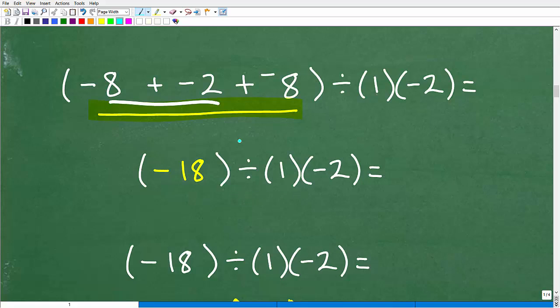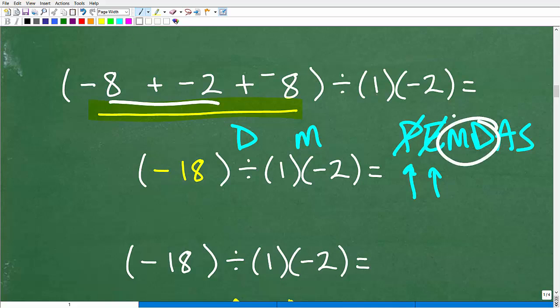So what operations do we have left? Well, if you look here, we have division and we have multiplication. So we have to continue to reference our PEMDAS. And PEMDAS tells us what? Well, we finished with parentheses. Although we have numbers inside of parentheses, there's no operations to do in there. E stands for exponents or power. So there's nothing there. So we're down to multiplication and division. So what do we see first from left to right? We see division first. Okay, so this is what we need to do. Negative 18 divided by one.